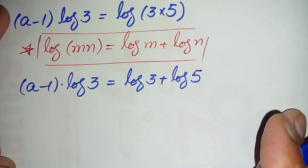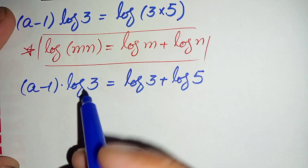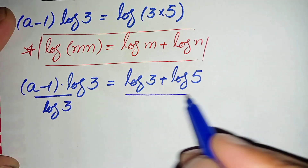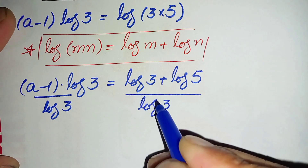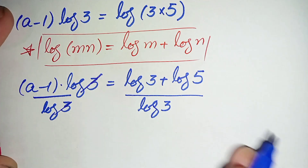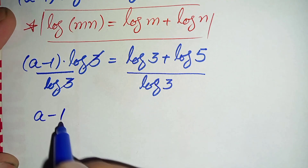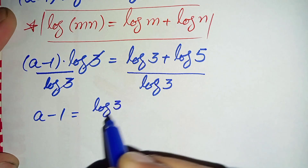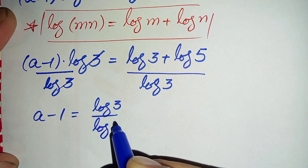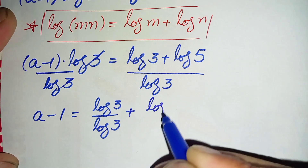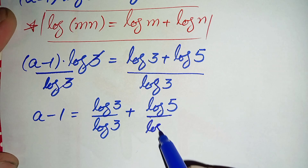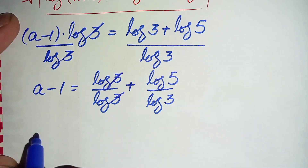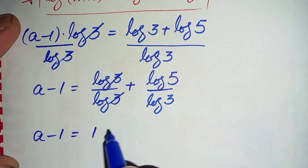Next we divide both sides by log of 3 to eliminate it from the left hand side. On the left hand side, log of 3 cancels, leaving only (a minus 1). On the right hand side we get log of 3 divided by log of 3 plus log of 5 divided by log of 3. Canceling log of 3 over log of 3 gives 1, so this becomes a minus 1 is equal to 1 plus log of 5 divided by log of 3.